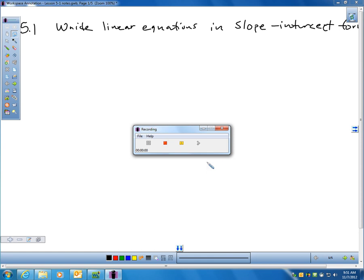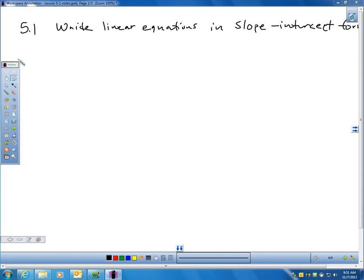All right, so if you want to turn ahead to page 283, we are starting chapter 5 with the following section. It's writing linear equations in slope-intercept form.